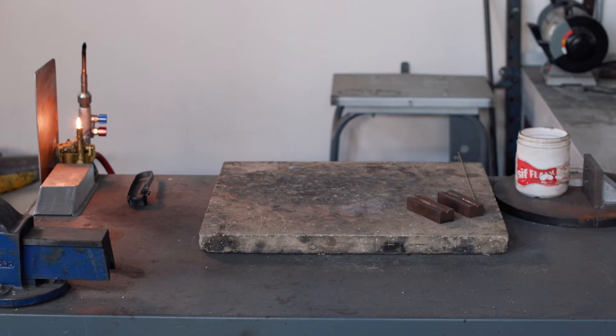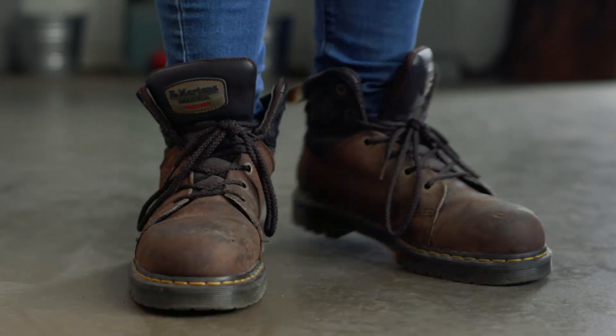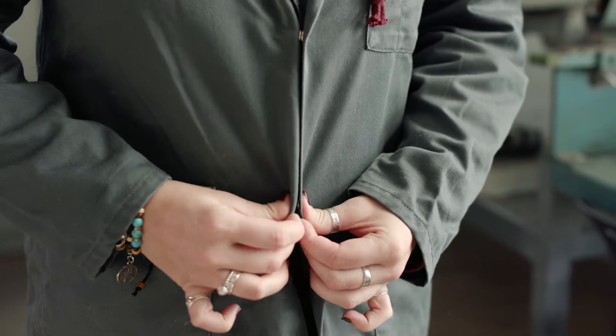Before using an oxyacetylene torch, you must ensure that you're wearing all the necessary PPE. This will be safety glasses of varying types depending on the application, safety shoes, and a buttoned-up protective smock or overalls.